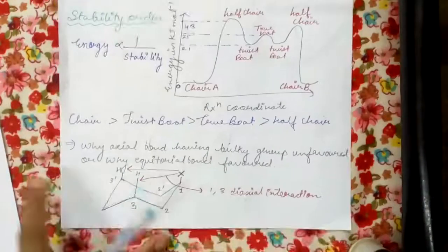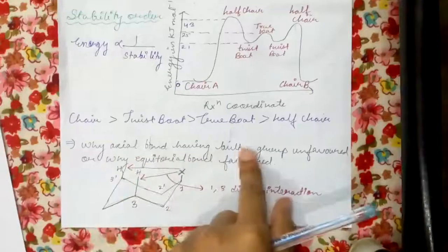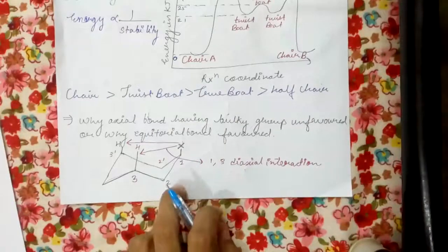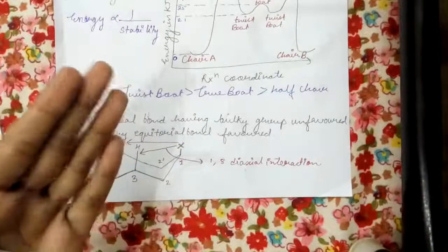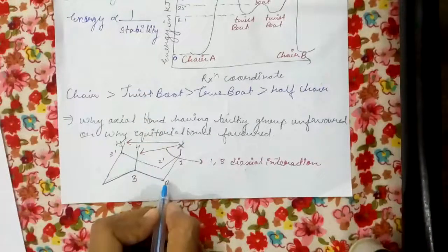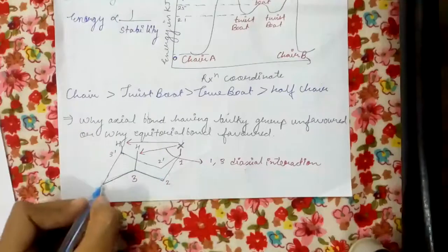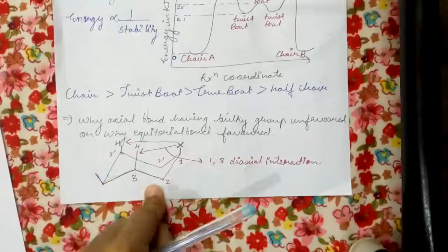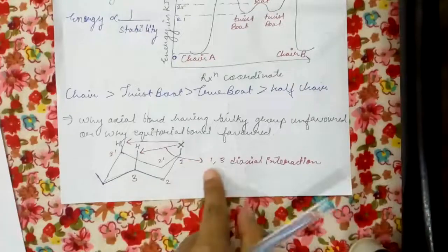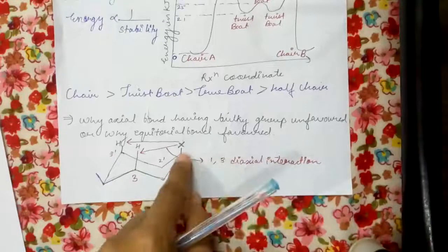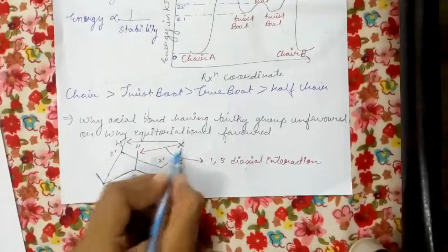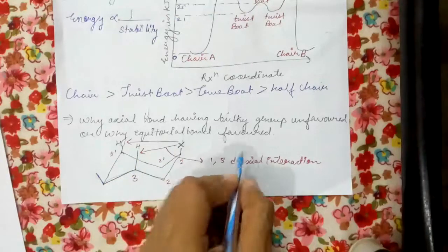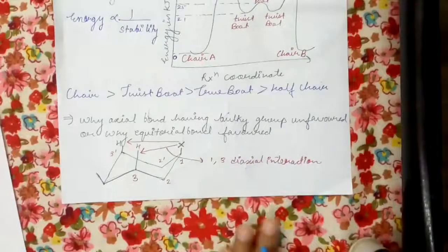So next, the last point: why are axial bonds having bulky groups unfavored, or why are equatorial bonds favored? This is because, whenever we are adding any substituent in a chair form, we always mark it to the equatorial bond. We do this because of the one-three diaxial interaction. Whenever we do it on axial position, there is an interaction between one and three positions. This is called diaxial interaction.